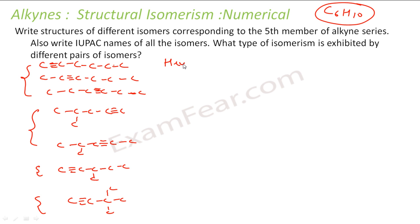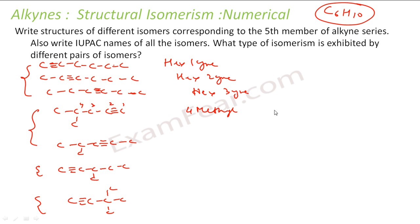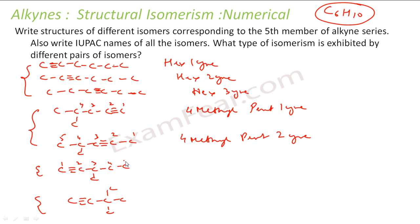Naming these isomers: hex-1-yne (triple bond at position 1), hex-2-yne (position 2), hex-3-yne (position 3). For the branched one with a methyl at position 4 and triple bond at position 1: 4-methylpent-1-yne. With a methyl at position 4 and triple bond at position 2: 4-methylpent-2-yne. With a methyl at position 3 and triple bond at position 1: 3-methylpent-1-yne.